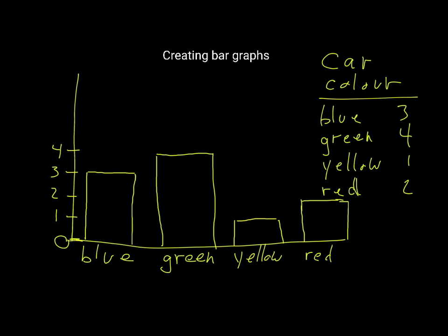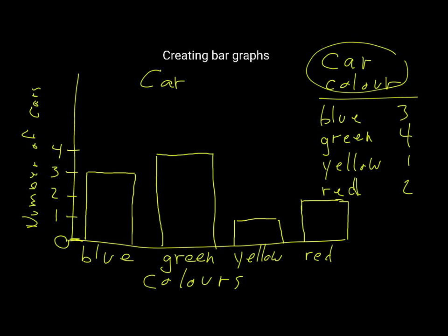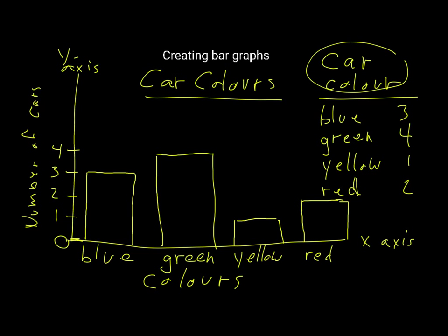Now I have to label the x-axis — this will just be 'Colors.' Along the y-axis I write 'Number of Cars.' I'll write a title here — 'Car Color' — and underline it. Then I label the x-axis and the y-axis.